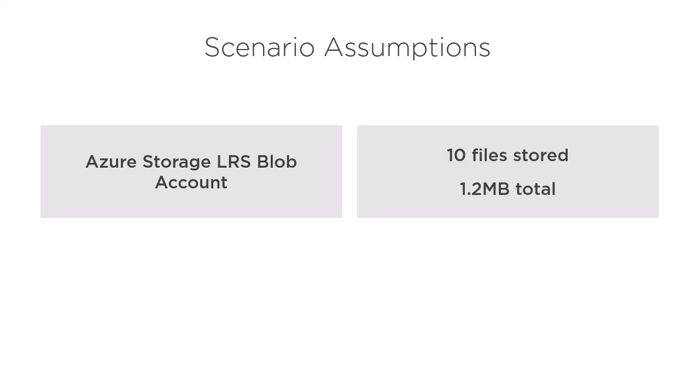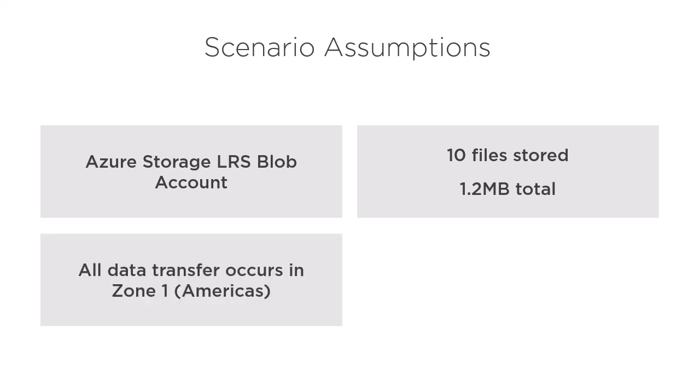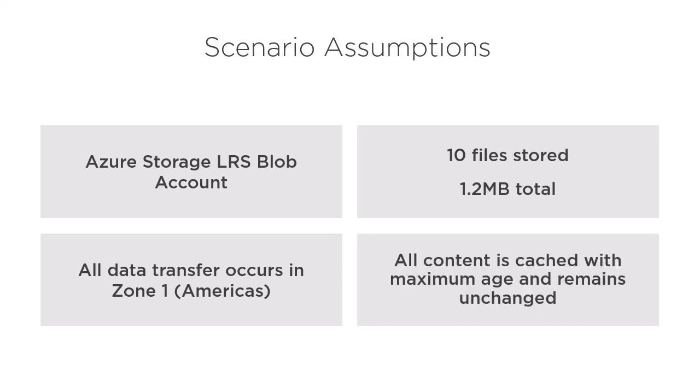In this scenario, there are only 10 files stored amounting to 1.2 megabytes of total storage used. When talking about data transfer costs, we're going to assume that all of that occurs within Zone 1, which is basically the Americas. The farther out you go, such as Zone 2 or Zone 3, the higher the costs are. When talking about the CDN, we're going to assume that the origin content is cached with a max TTL, or time to live, so the CDN only retrieves a file once from blob storage. If the file expires and the CDN has to go back and retrieve the file from the origin, that's going to incur additional costs. These constraints are enforced because costs will increase if any of these metrics increase.